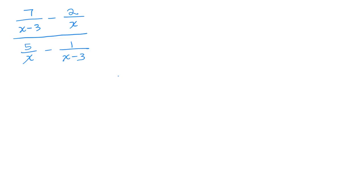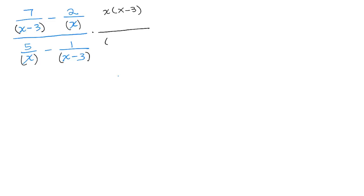We're going to simplify this complex fraction. We see there is more than one term in both the numerator and denominator, so the best method would be to multiply both the whole numerator and whole denominator by the least common multiple of all the denominators. I have a factor of x minus 3 in the numerator and that same factor in the denominator, and then I have an x and an x. So x times (x minus 3) will be the least common denominator of all the fractions. We want to multiply the whole numerator and the denominator by x times (x minus 3).